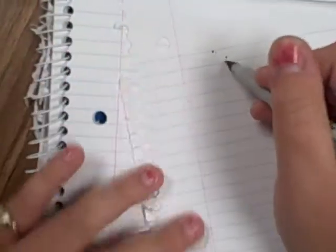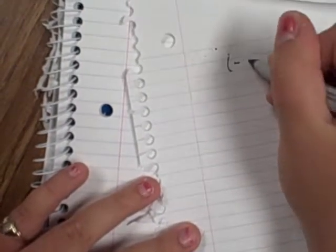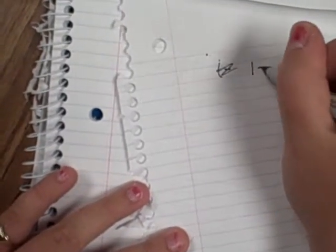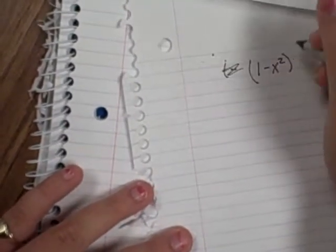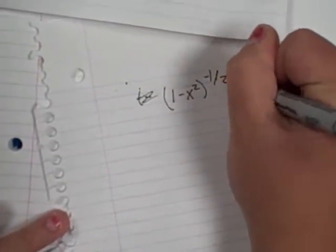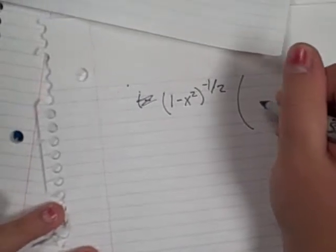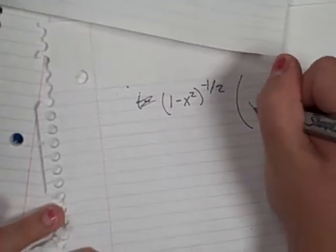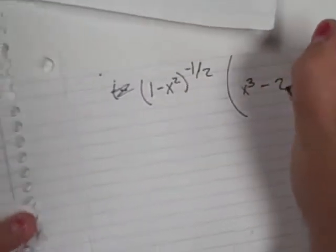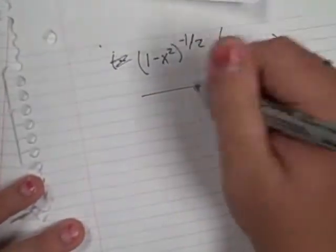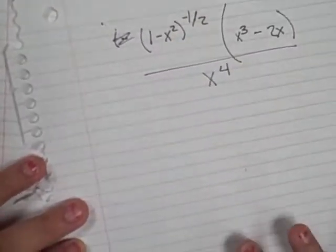So you have in parentheses again, the 1 minus x squared to the negative one half. Big parentheses. Then you get left with x cubed minus 2x over x to the fourth. Now that you have this, this is your problem. Now you see this little exponent right here? It's unhappy.